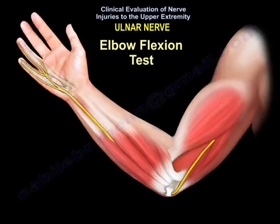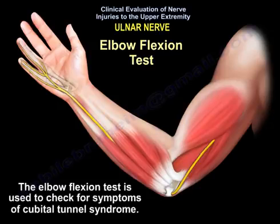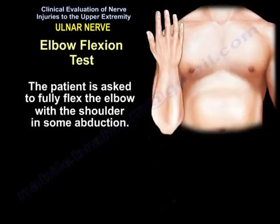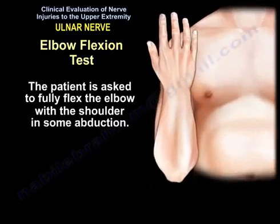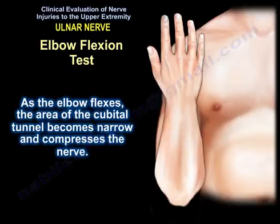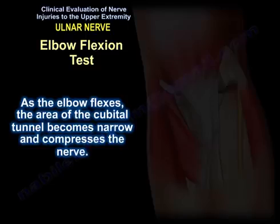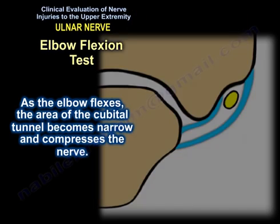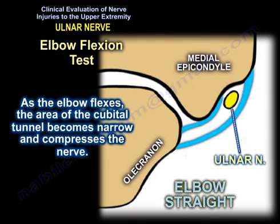The elbow flexion test is used to check for symptoms of cubital tunnel syndrome. The patient is asked to fully flex the elbow with the shoulder in some abduction. During elbow flexion, the area of the cubital tunnel becomes narrow and compresses the nerve, as shown in this diagram.